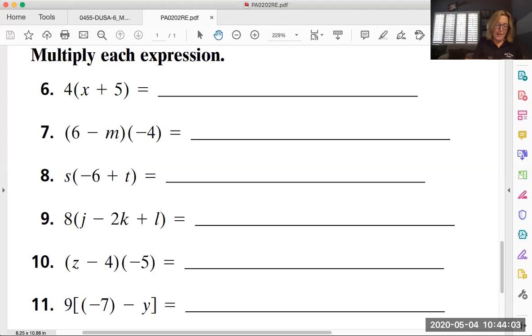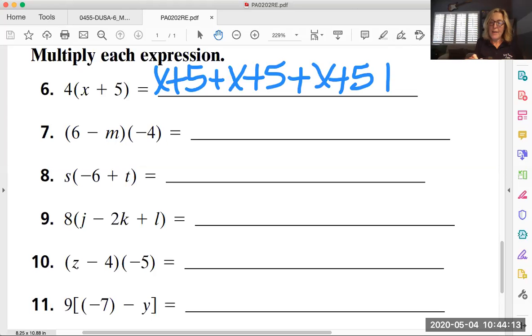So let's just do that: x plus five, and then we're going to do it again x plus five that's twice. We want to do it another time and then another time. So we repeated x plus five four times. That's what this problem told us to do.